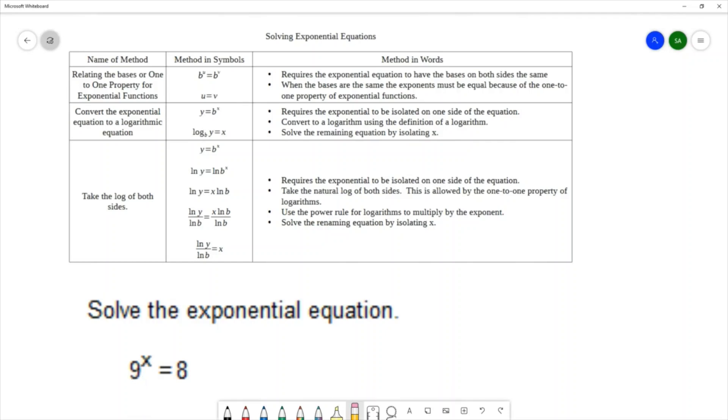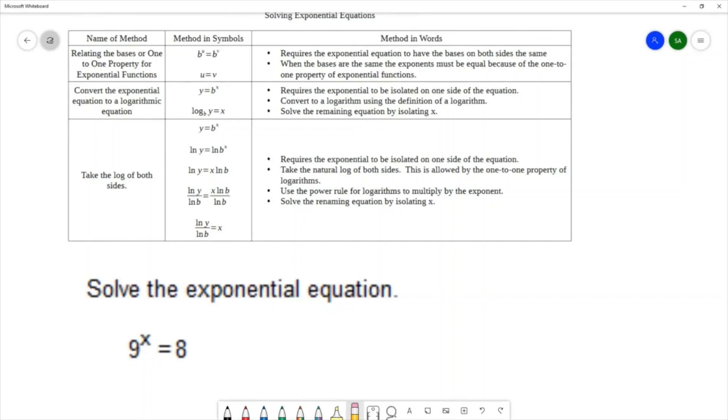So let's try that method. We're going to write this as a logarithm. I would write the word log, I would use a base of 9. Base of 9 is the base of the exponential. The log always equals the exponent, and then 8 is the expression that goes inside the logarithm. And then what we need to do is solve the remaining equation. Now this equation is already solved because we have x equals, and everything on the other side is a number. Log base 9 of 8 can be put in the calculator and work out what that is. So we were able to solve this equation using the second method.